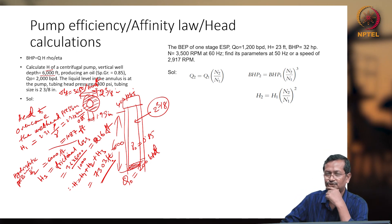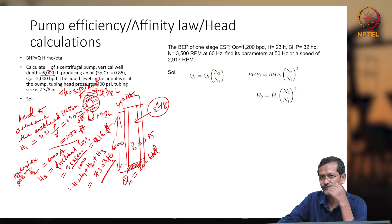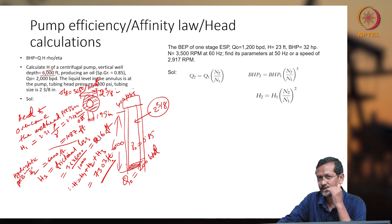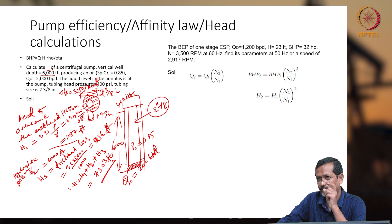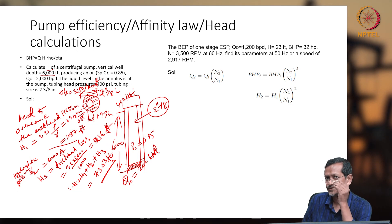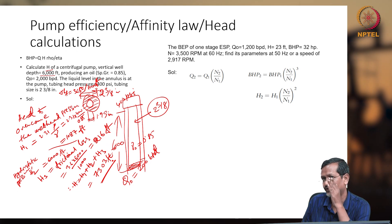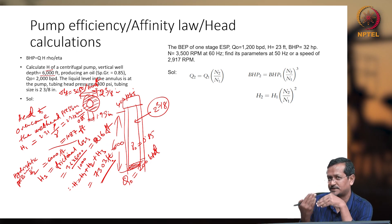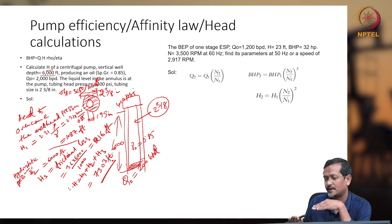Now you have seen the formulation for the affinity law. The affinity law states: flow rate Q is proportional to N, BHP is proportional to N cubed, and H is proportional to N squared. If you change speed from 60 Hz to 50 Hz or vice versa, you can get the new flow rate, BHP requirement, and head requirement approximately from this formula.